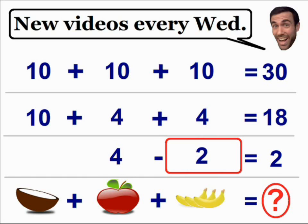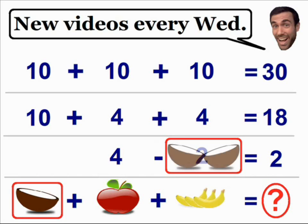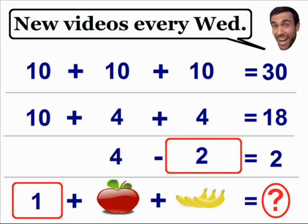If you look in our last equation, we also have a coconut — but here is where this problem gets a little tricky. In the last equation, notice how we have one part of a coconut, where in the third equation we had two parts of a coconut. So we know that if two parts of a coconut have a value of 2, then one part of a coconut must have a value of 1.